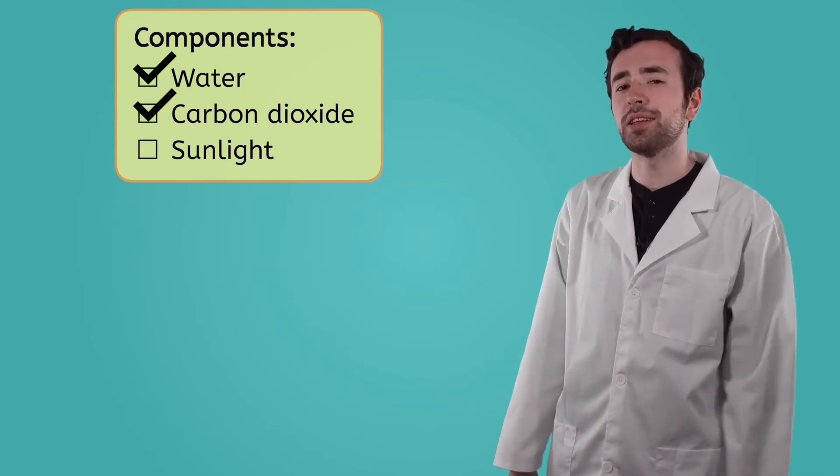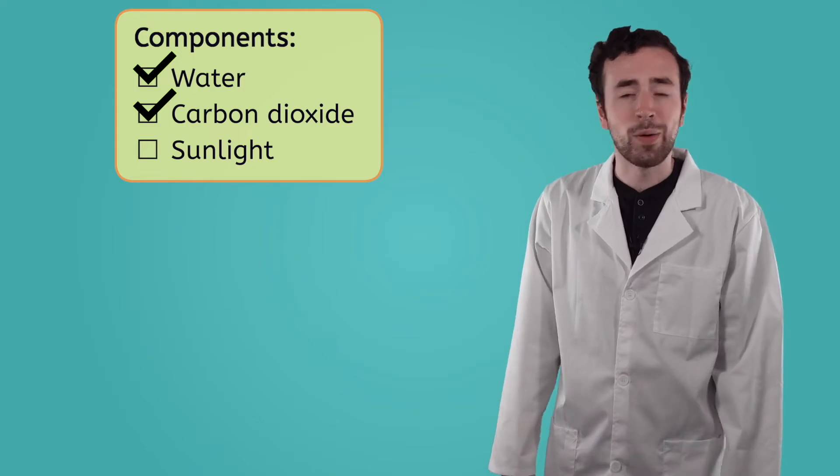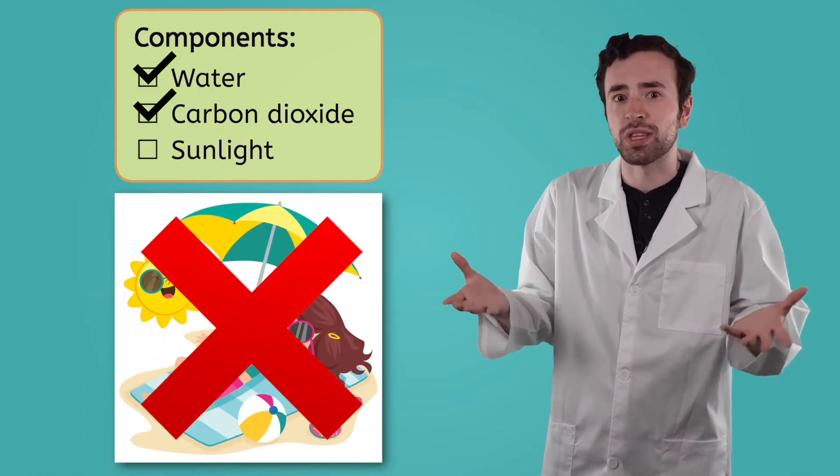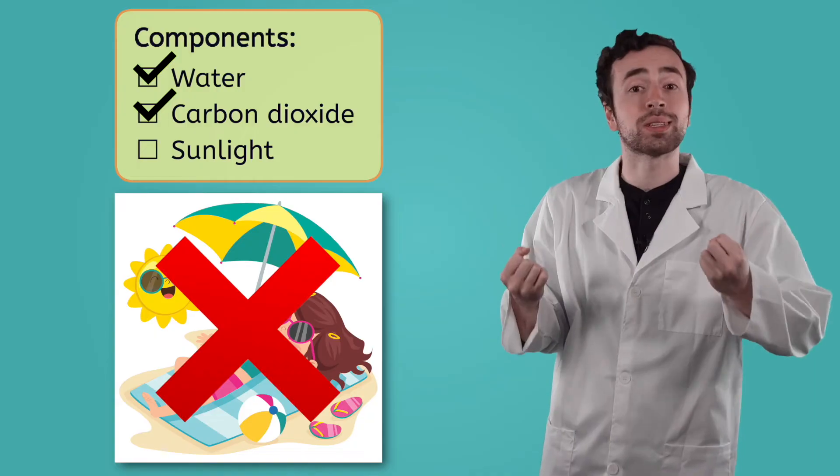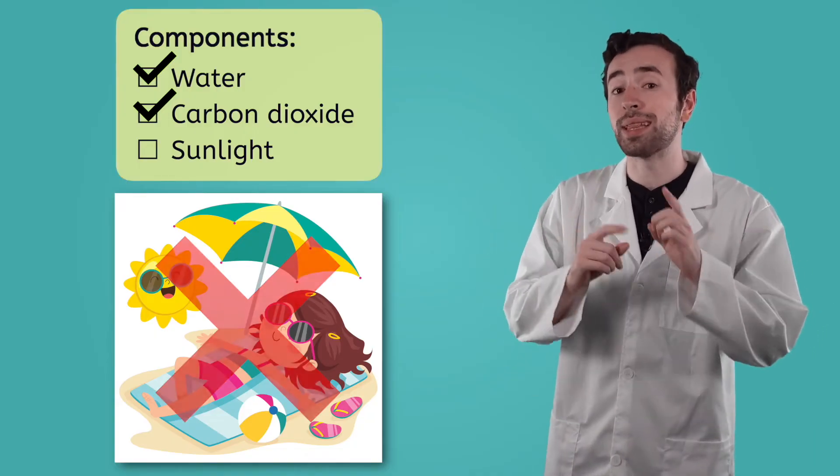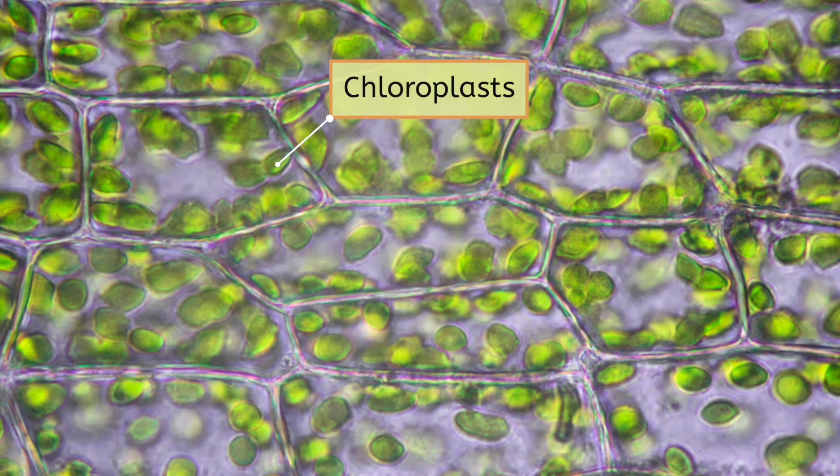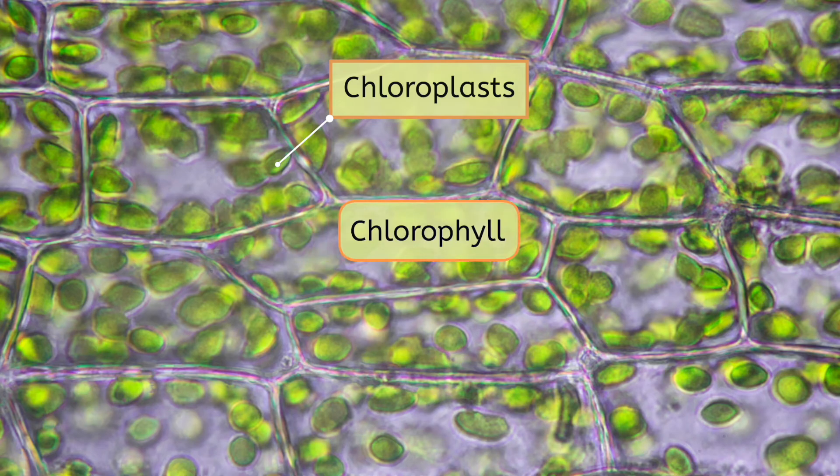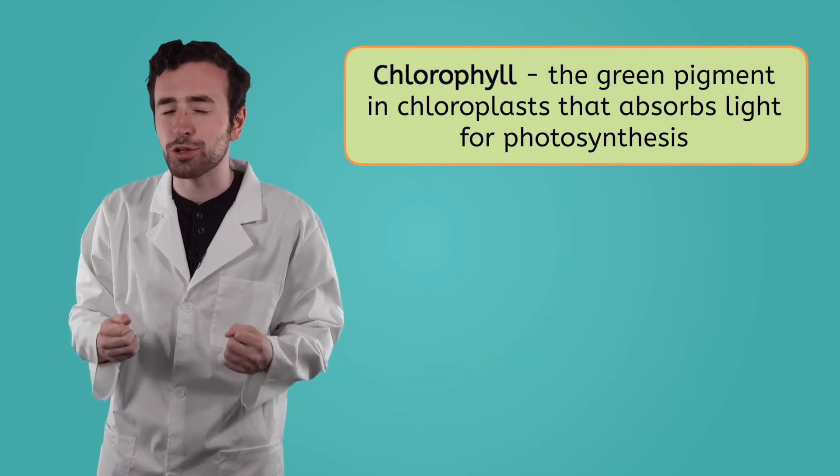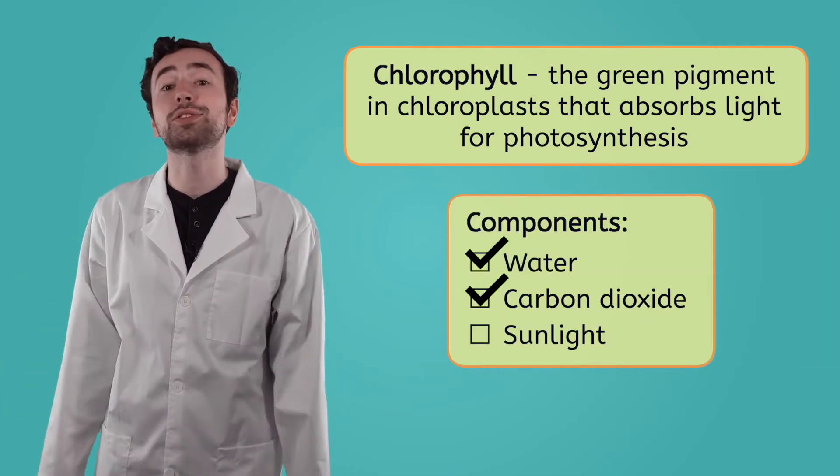The last thing needed for photosynthesis is sunlight. While humans may talk about soaking up the sun, we can't actually harness the energy from the sun's light to use for ourselves the way plants can. The reason plants can absorb and use the sun's energy is because they have structures called chloroplasts. Inside those chloroplasts is a green pigment called chlorophyll, which is what gives green plants their color by reflecting green light. Chlorophyll absorbs the light energy from the sun, giving the plant its third component.